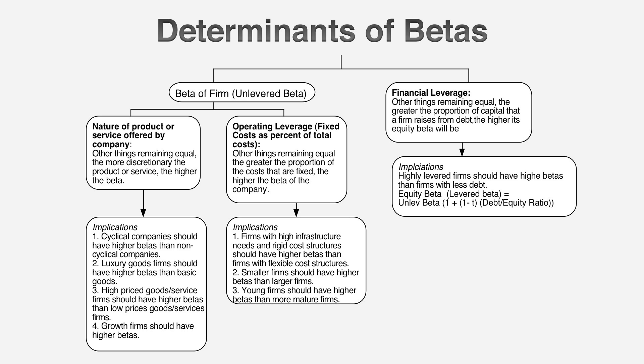The third and final ingredient: when you borrow money, you create a fixed cost in the form of interest expenses. Interest expenses make good times even better for equity investors and bad times even worse — they magnify risk. So the more you borrow, the higher your beta will be. When I sit down to value a company, rather than looking at a regression page, I start with the fundamentals: What does this company do? What does its cost structure look like? How much has it borrowed? Answering those questions gives me far better insight into what the beta should be than taking the slope of a regression line.